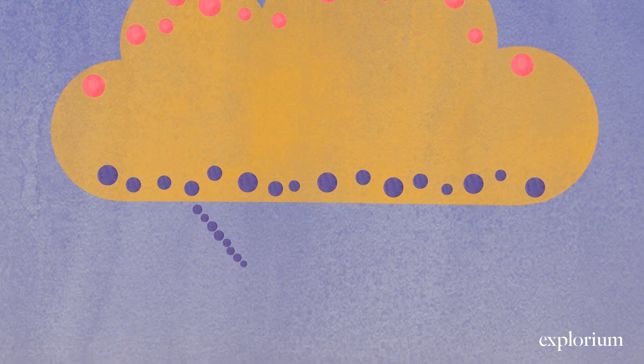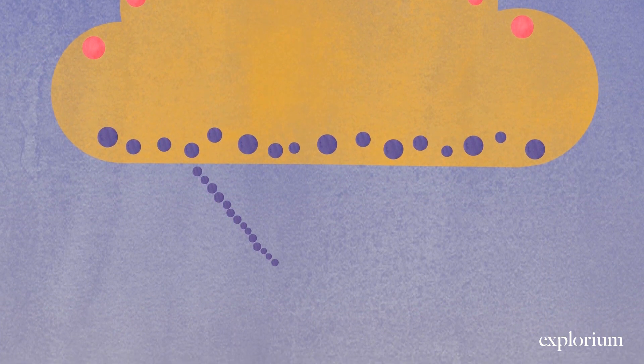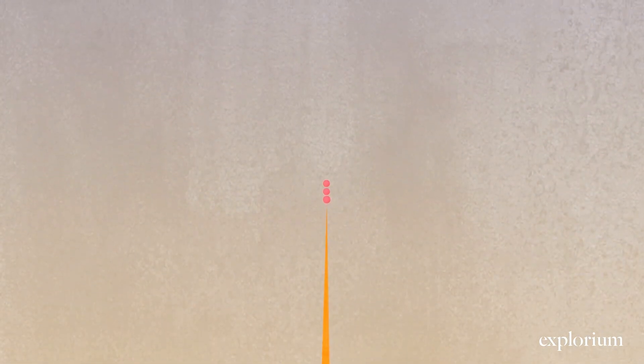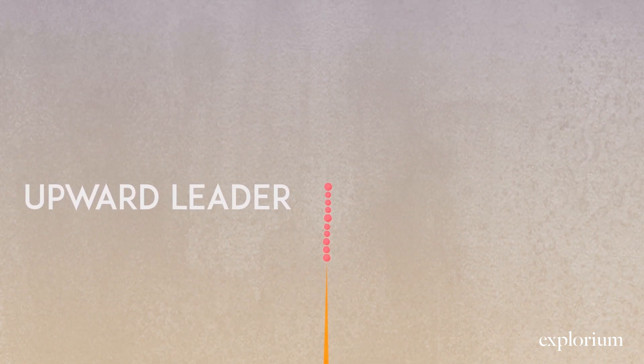Lightning starts with negative charges moving from the clouds towards the ground. Scientists call this a stepped leader. Meanwhile, an upward leader is formed as positive charges moving from the ground, usually from tall objects.